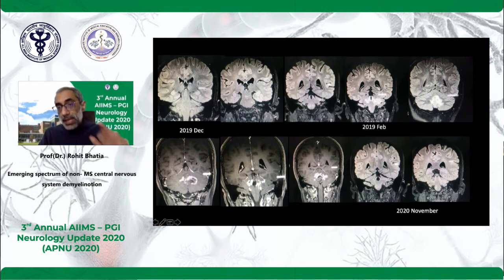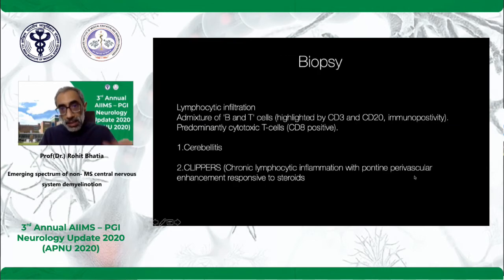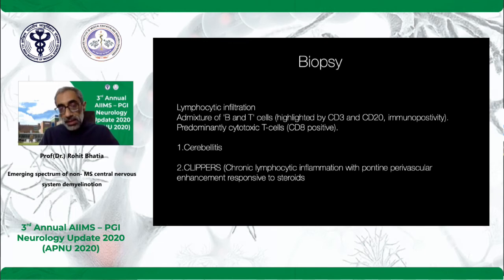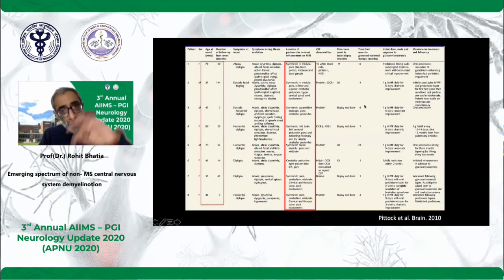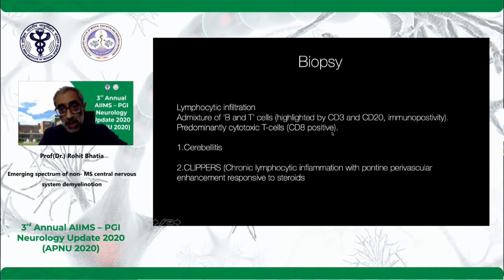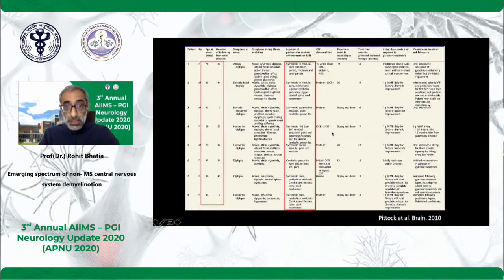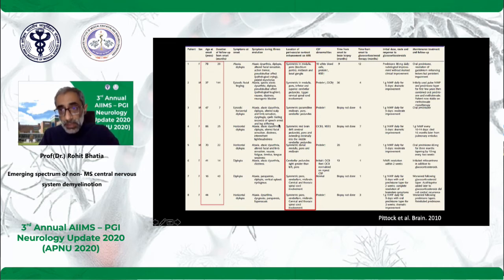The initial MRI from October 2019 showed small specky lesions, which increased by the time she came to neurosurgery — with large nodular enhancement around the fourth ventricle from where she was biopsied. The last scans after she kept taking periodic steroids show an almost clear brainstem. The biopsy showed highlighted CD3 and CD20 cells and a lot of cytotoxic cells, and it was labeled mainly an inflammatory disease — either cerebellitis or a Clippers-like presentation. We don't know whether this patient is Clippers or some other monophasic recurrent demyelination, but this could be potentially a Clippers variant.